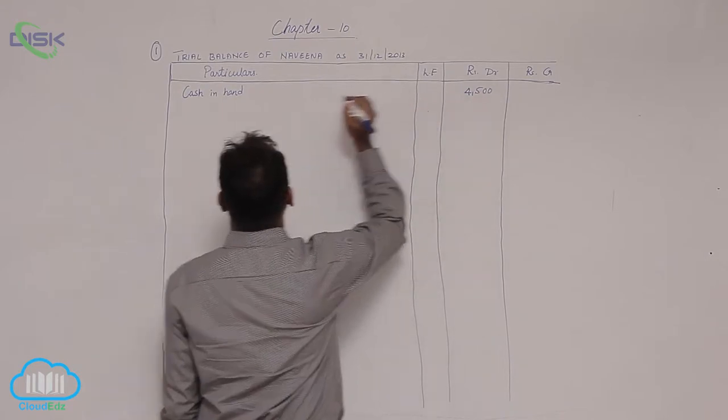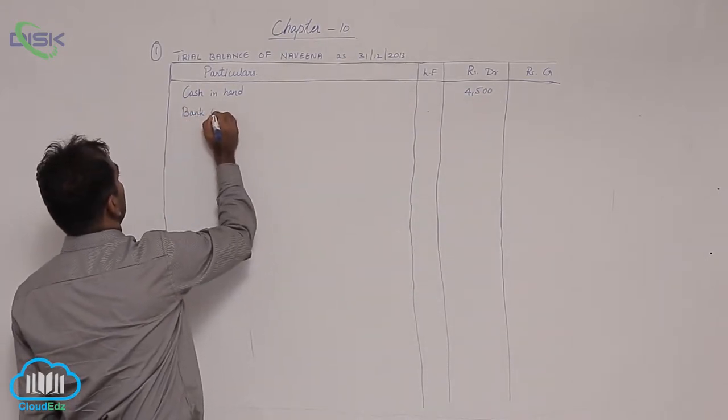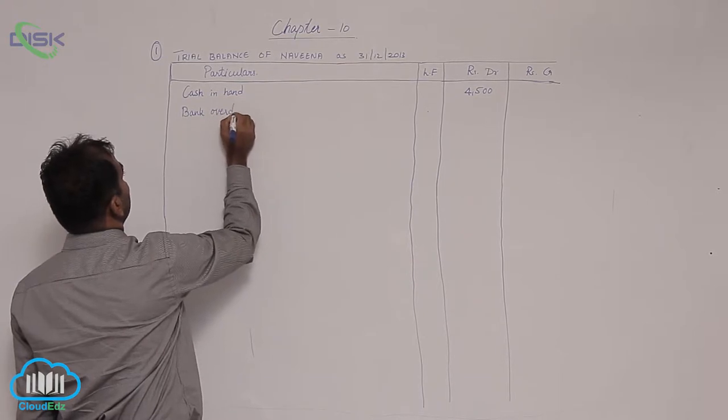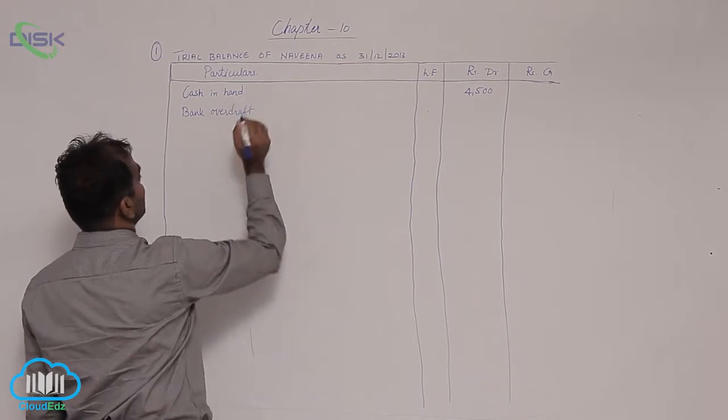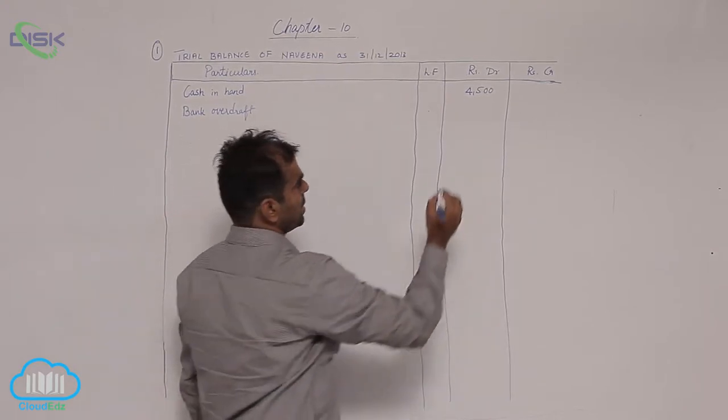Now next is bank overdraft, personal account. Overdraft means it shows credit balance. So bank overdraft we will be entering in credit column 8000.